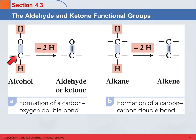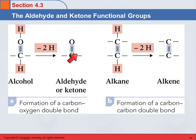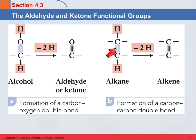When an alcohol loses two hydrogens, you create a double bond and get the carbonyl functional group. Similarly, if you lose two hydrogens from an alkane, you get an alkene. So taking away two hydrogens forms that double bond.